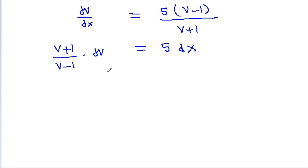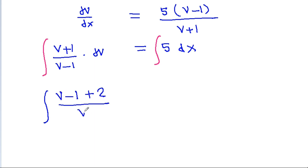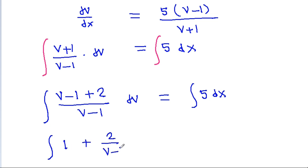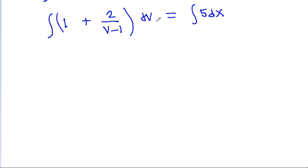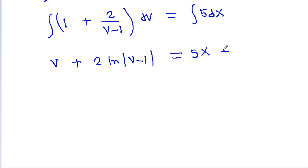Integrating both sides, the left side becomes the integral of (v - 1 + 2) / (v - 1) dv, which is integral of (1 + 2/(v - 1)) dv, equal to the integral of 5 dx. This gives v + 2 ln|v - 1| = 5x + c.